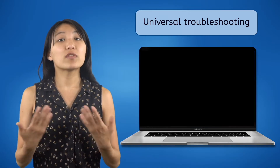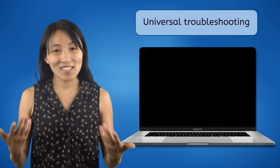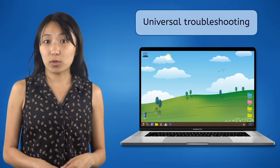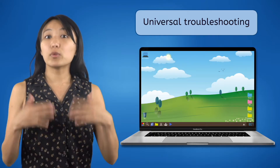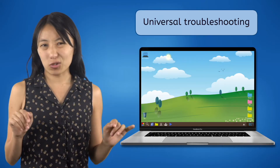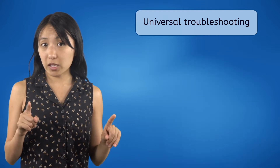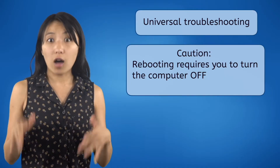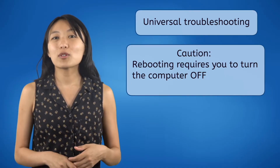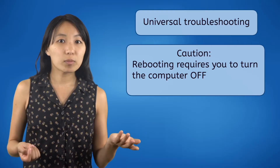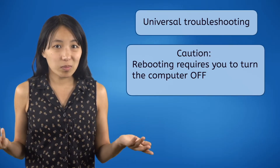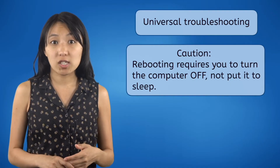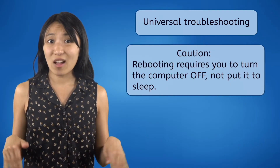Turn it off, give it a chance to cool off and reset its memory, and then turn it back on. This process is known as rebooting the computer because you're letting the computer boot up again without all the potential glitches. You have to turn the computer off — like completely off. Most computers have a sleep mode or screensaver mode, but all this does is turn off the display and save a little power. It does not help the computer refresh its memory. You have to shut it down completely.